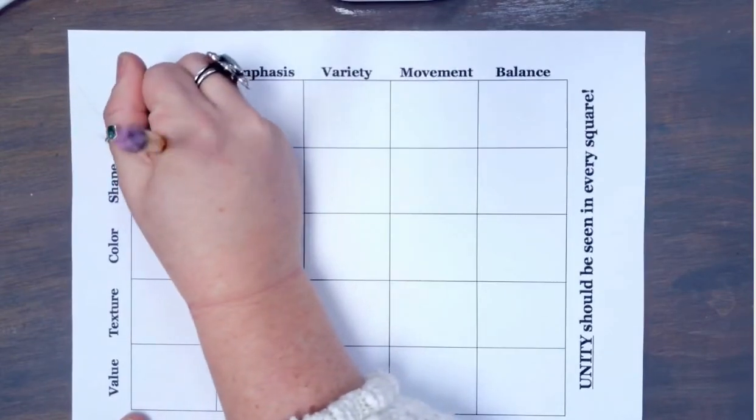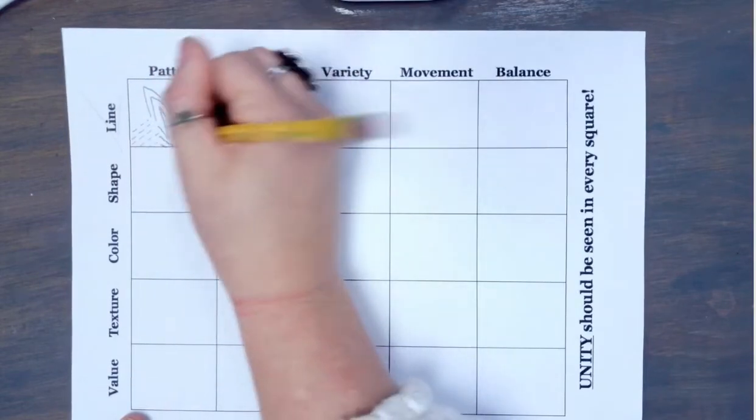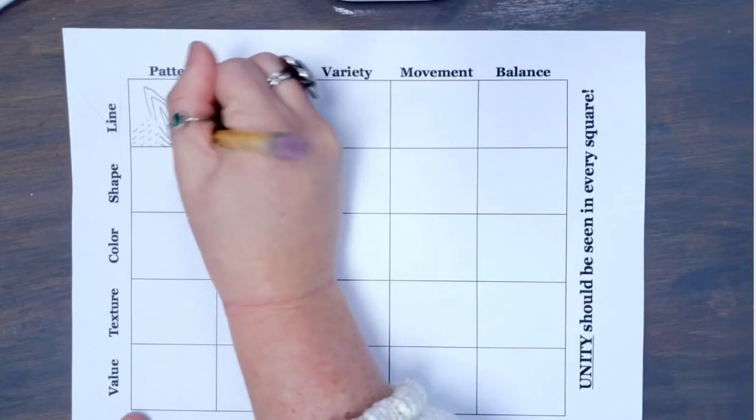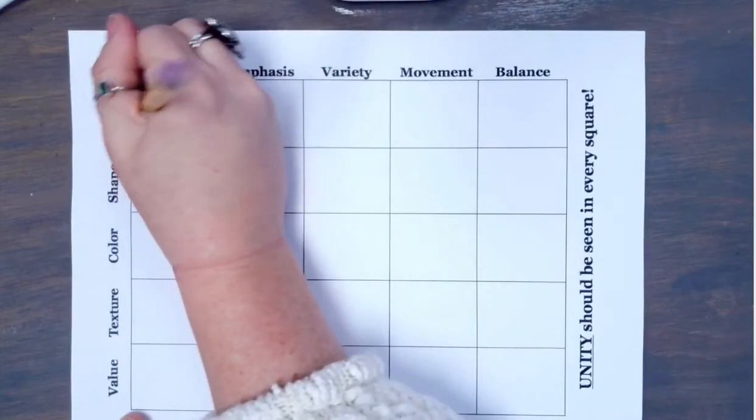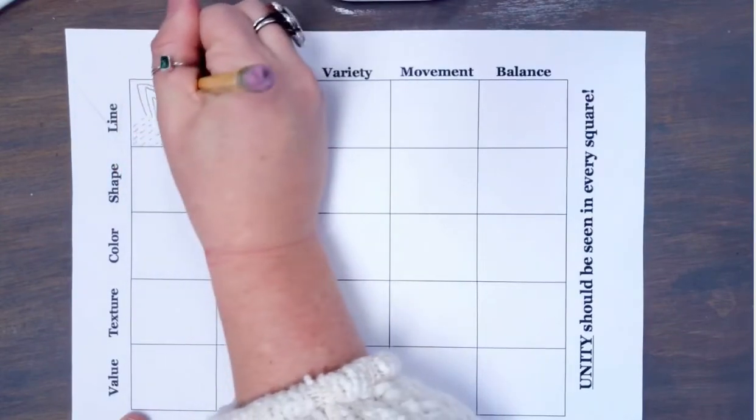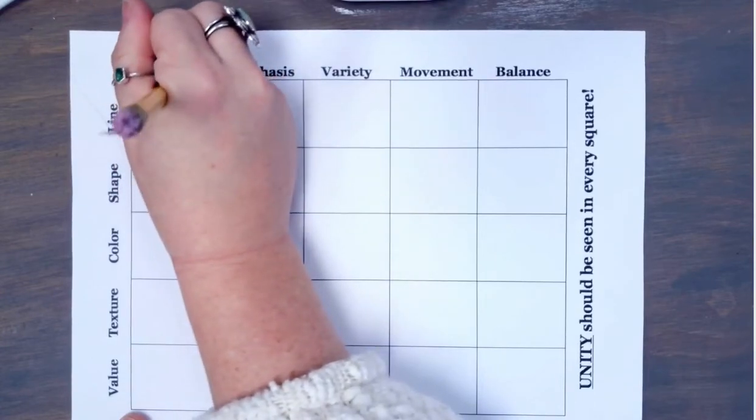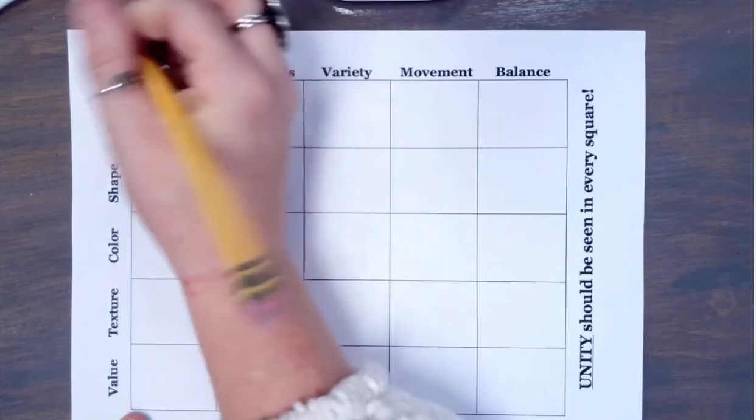Remember use pencil first and then you can always go over everything in a sharpie or a pen and remember color is going to be added into the color section of the matrix only. So the rest of it is mostly going to be black and white. I'm just still creating my pattern here. Remember take your time. We will have enough time to complete this project.